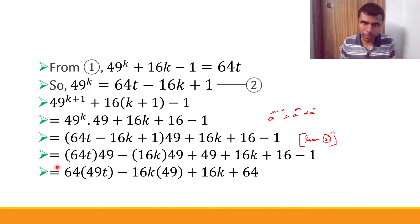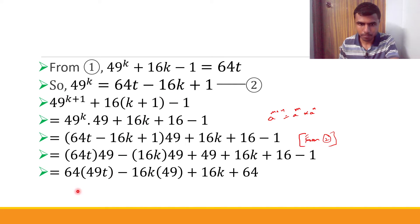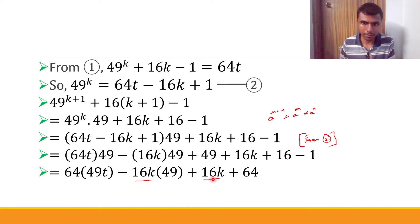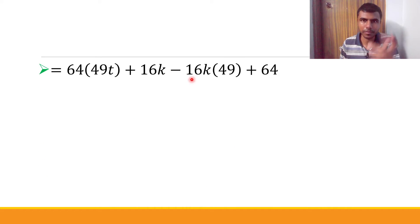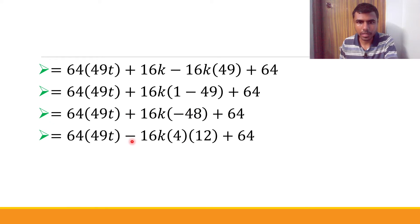I write 64t×49 as 64×49t, keeping 64 outside the bracket. The constant 64 is also 64×1. So each of those terms is already 64 times something. Now I'm left with -16k×49 + 16k. My target is to make this sum also equal to 64 times something. Taking 16k common from these two terms gives 16k(-49 + 1) = 16k×(-48). Bringing the minus outside: -16k×48.